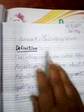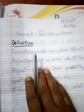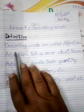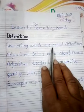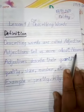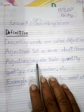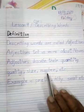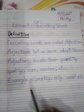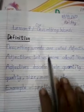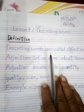In the previous class, we also wrote the definition of describing words. What is the definition of a describing word? Describing words are called adjectives. Adjectives tell us more about a noun. Adjectives describe their quantity, quality, size, number, etc. Adjectives tell us more about a noun — this is the definition of describing words.